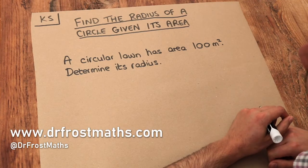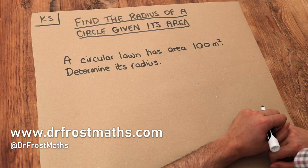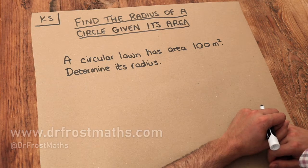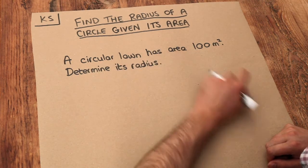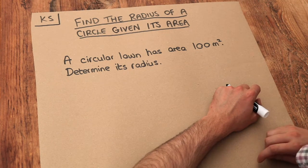Hello and welcome to this Dr. Frost Maths key skill video on finding the radius of a circle given its area. We've got this problem here: A circular lawn has an area of 100 metres squared. Determine its radius.